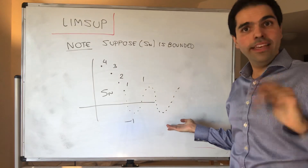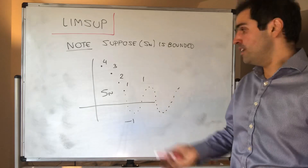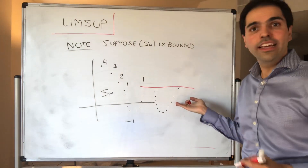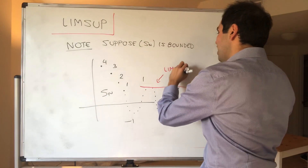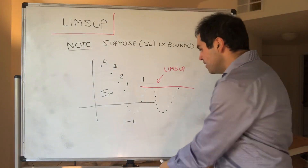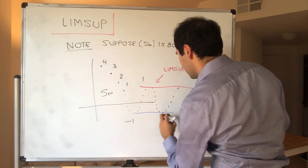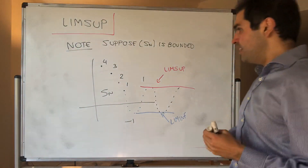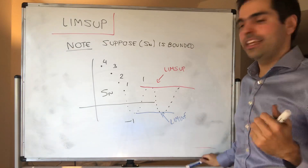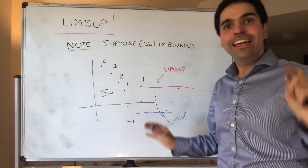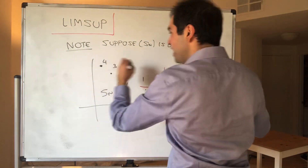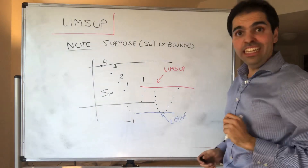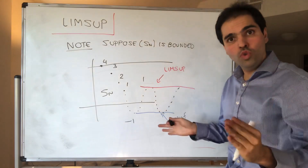This sequence doesn't converge — it doesn't make up its mind. But what we would still like to say is, even though it doesn't converge, it seems the largest possible limit of this sequence is 1. And it's that largest possible limit that we would like to define as the lim sup. Similarly, the smallest possible limit is what's called the lim inf. Here it looks like the smallest possible limit is minus 1. Now, it's very important to understand: lim sup is not the same as sup. Because the sup — the biggest value of this sequence itself — is 4. But the lim sup is 1, much smaller.